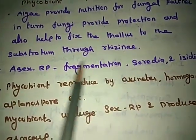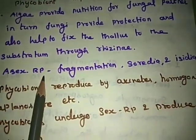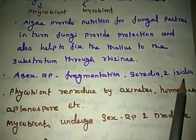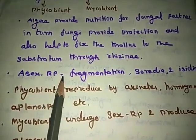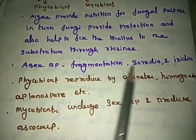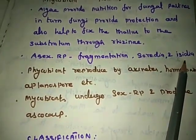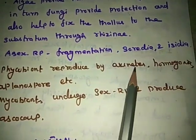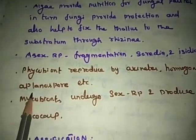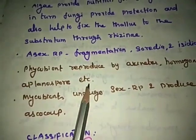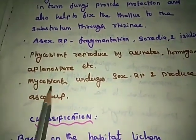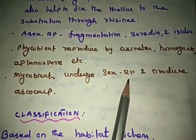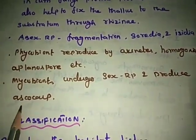Asexual reproduction in lichens takes place through fragmentation, soredia, and isidia. The phycobiont reproduces by akinetes, hormoconia, and aplanospores. The mycobiont — the fungal partner — undergoes sexual reproduction and produces ascocarps.